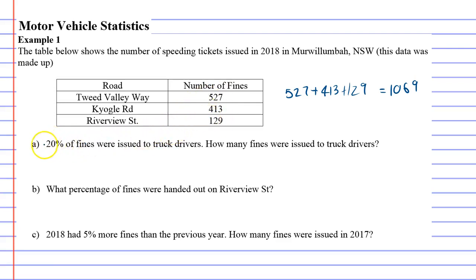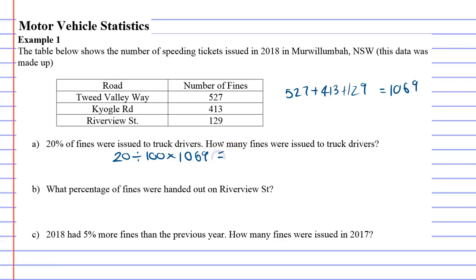Question A says 20% of fines were issued to truck drivers. It's not mentioning any roads, so we're going to use the total of 1069. How many fines were issued to truck drivers? This uses the first method: take your percentage, divide by 100, and multiply by the amount. So 20 ÷ 100 × 1069 = 213.8. So 213.8 of the drivers who got fines were truck drivers.